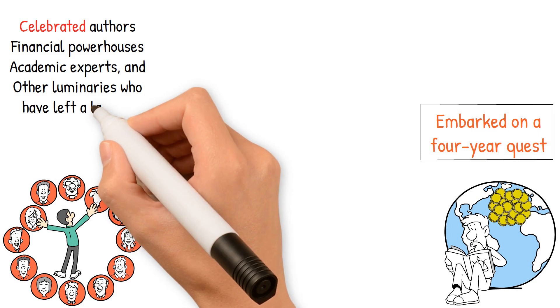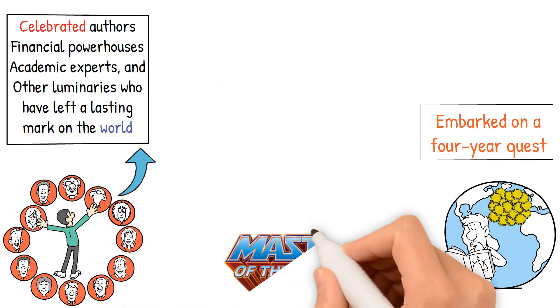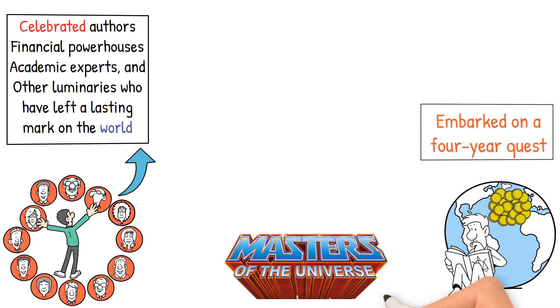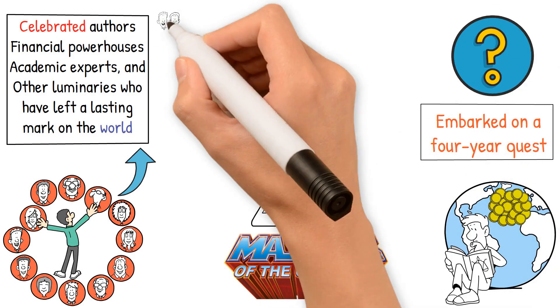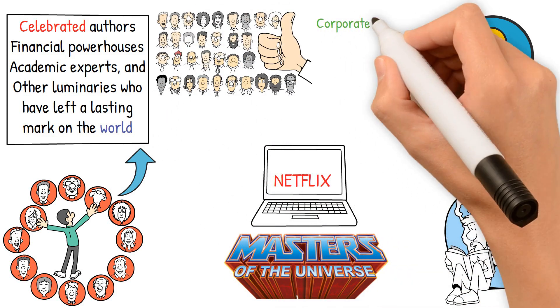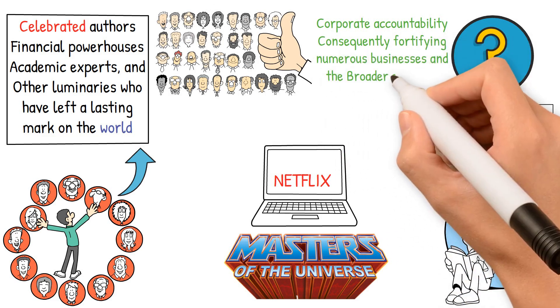Carl Icahn, christened as the Master of the Universe by Time magazine, found success with firms like Netflix. His main mission? Safeguard the interests of common shareholders by bolstering corporate accountability, consequently fortifying numerous businesses and the broader economy.